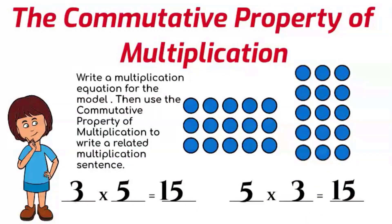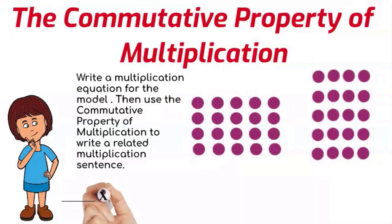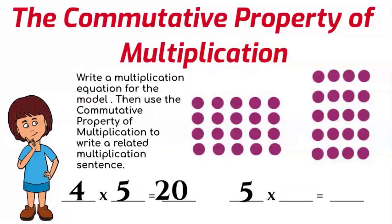Let's try another array. Count the rows in the first array — four rows. How many are in each row? Five. So the total in the first array is twenty. Now we flip the orientation and the factors: five times four, and the product remains the same — twenty.